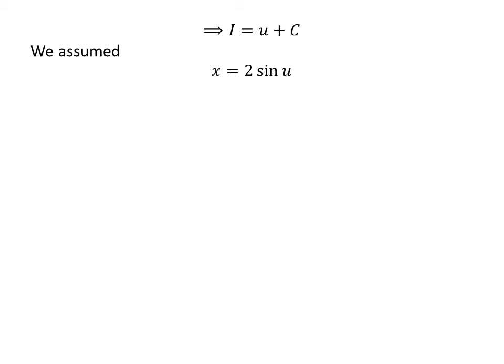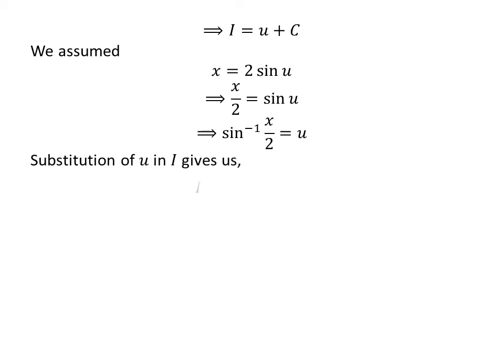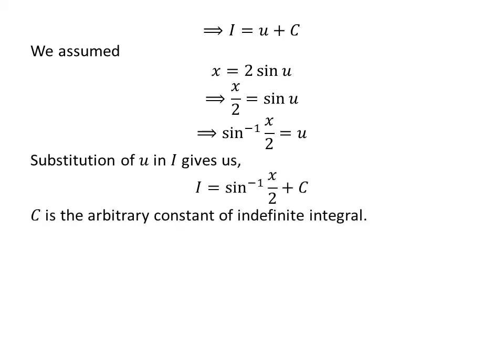We assumed x is equal to 2 times sine of u. Taking 2 to the left-hand side gives us x over 2 is equal to sine of u. Since arc sine is the inverse function of sine, arc sine of x over 2 is equal to u. Thus, replacing u by its value, I is equal to arc sine of x over 2 plus capital C.